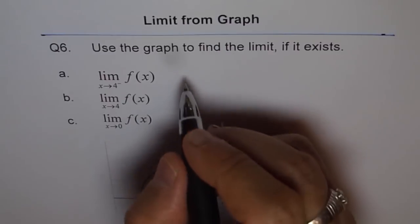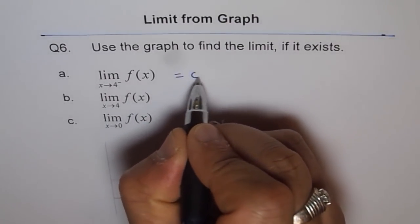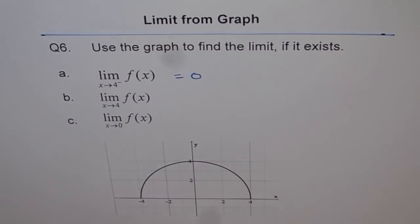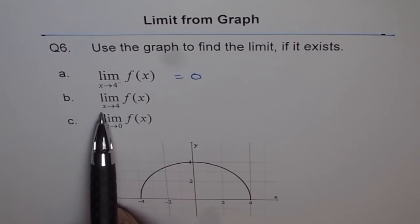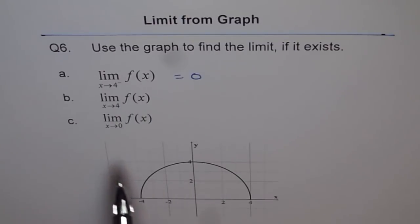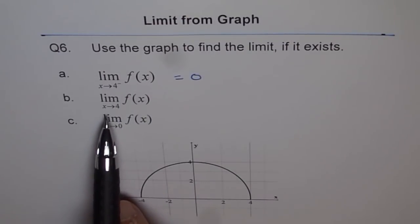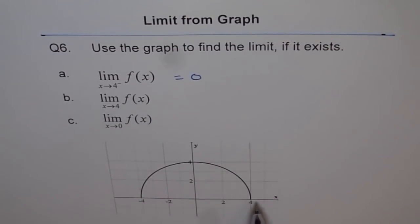Therefore this limit exists and the value is 0. Now part b is limit of the function when x approaches 4. Now when you approach 4, you need to check the limit from both negative and positive sides. So when you approach from the negative side you approach 4, but how about from the positive side? We see from the positive side...